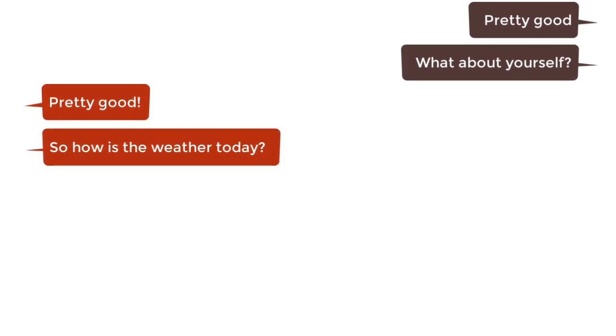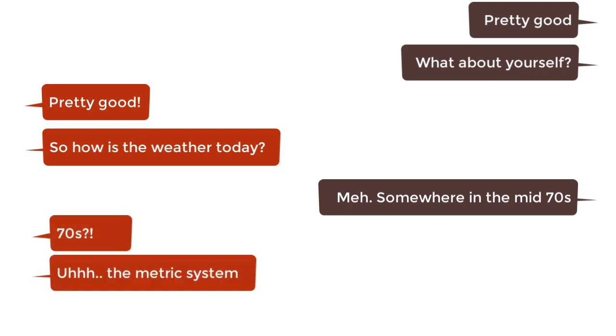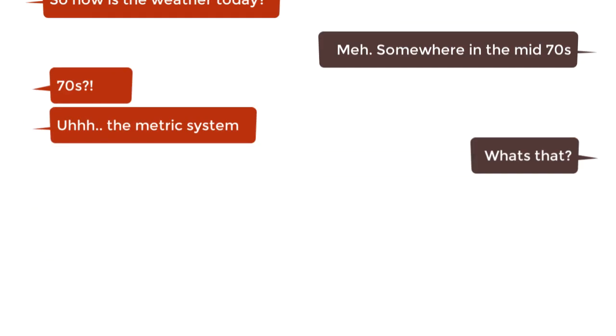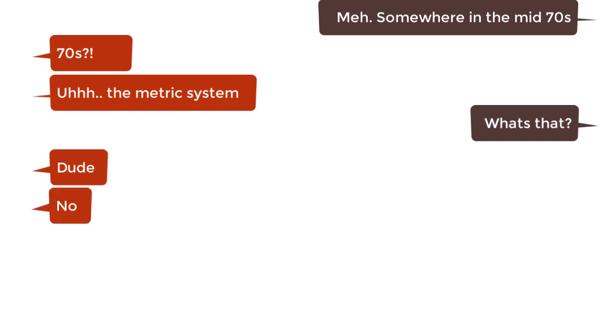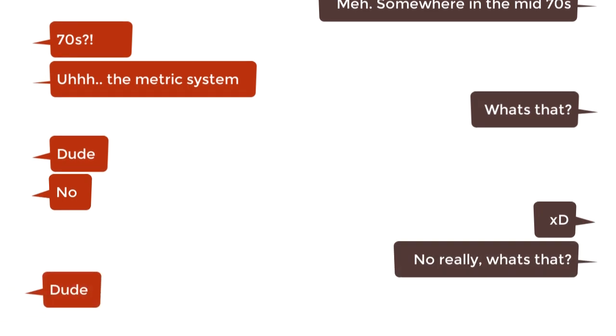So how's the weather today? Somewhere in the mid-70s. 70s? The metric system? What's that? Dude. No. No really, what's that? Dude. No.